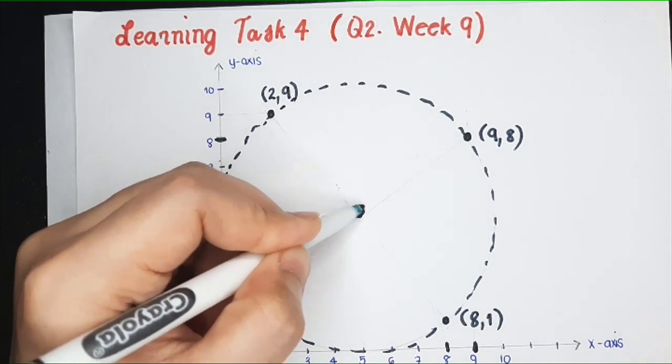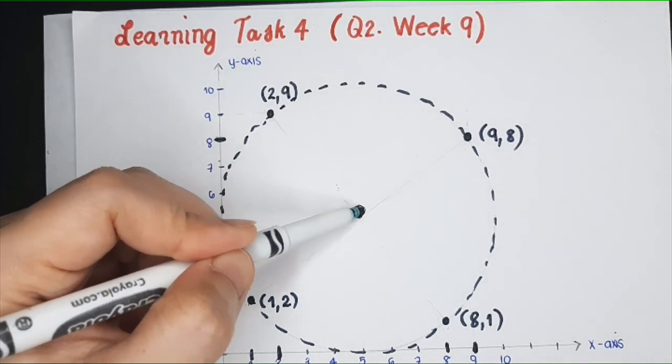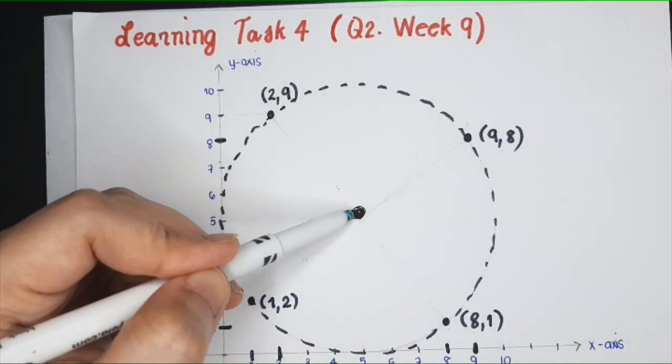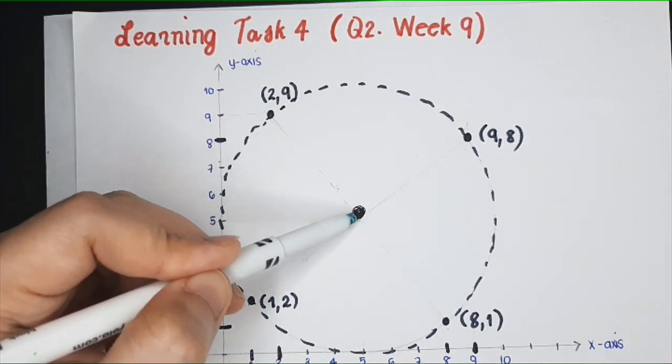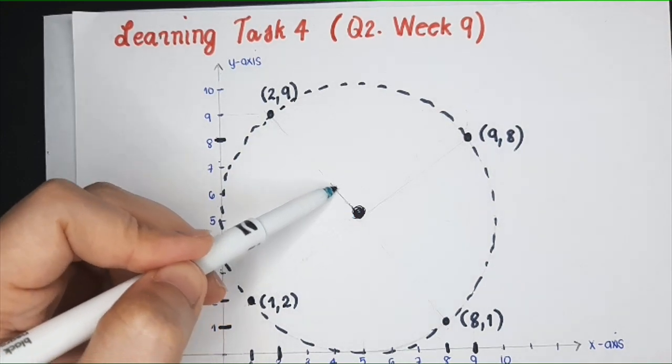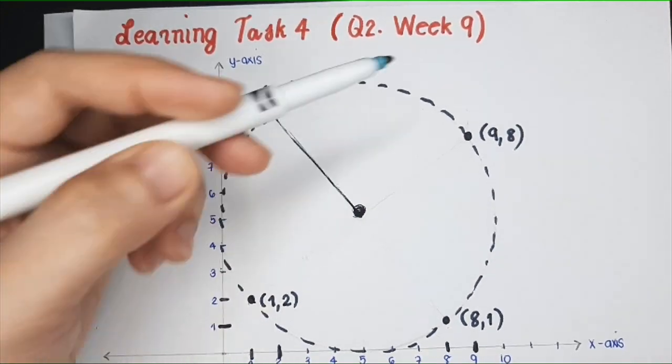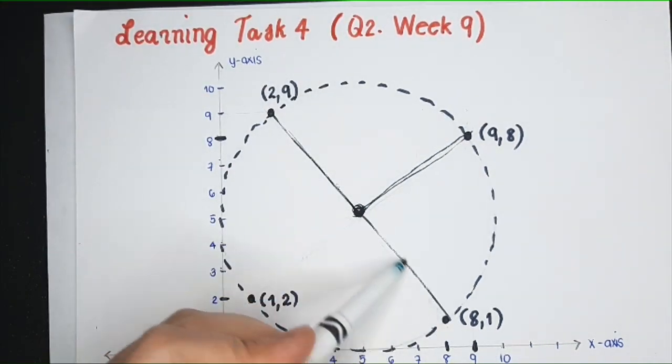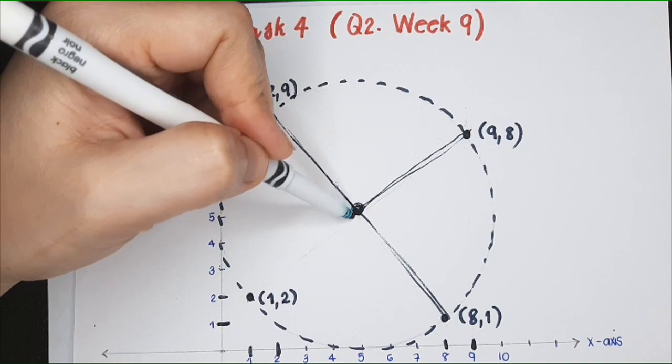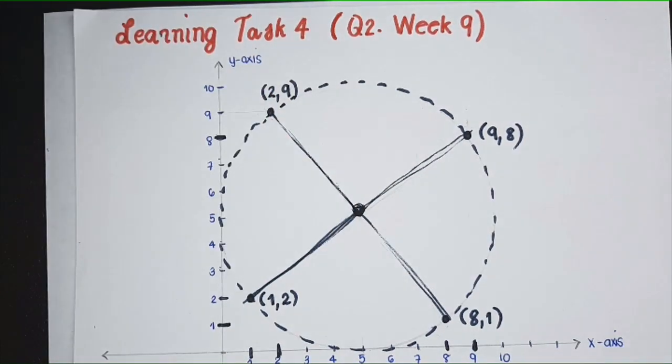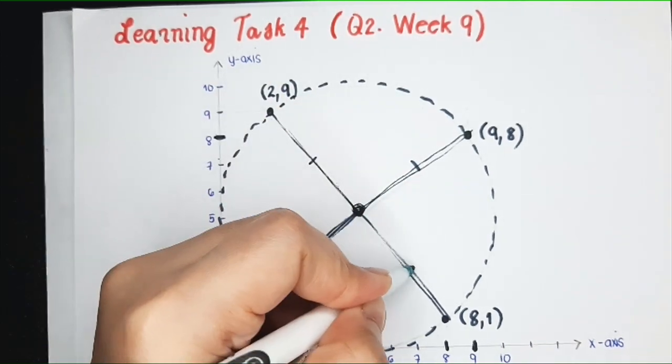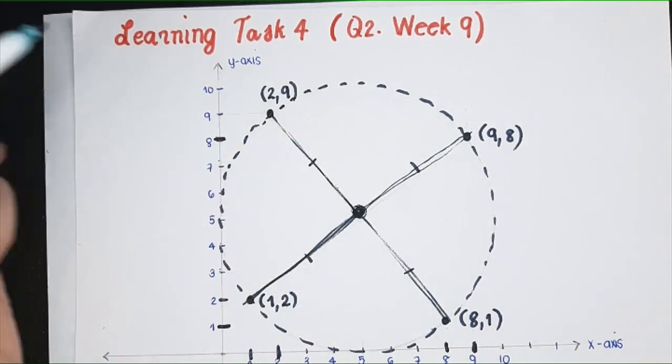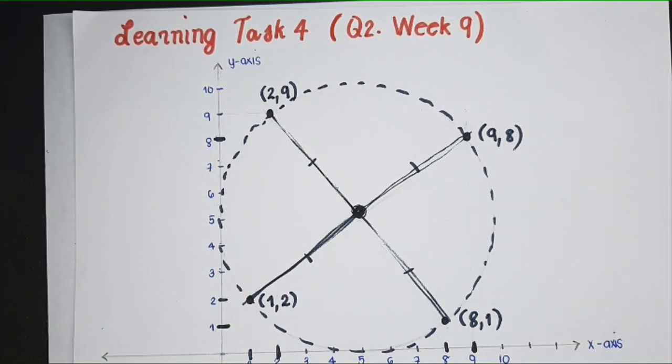So where should he place the water sprinkler so that it reaches all the bushes of Sampaguita and is equidistant from all the bushes? Perhaps at this point. We want to know the coordinates of this point such that it is equidistant.